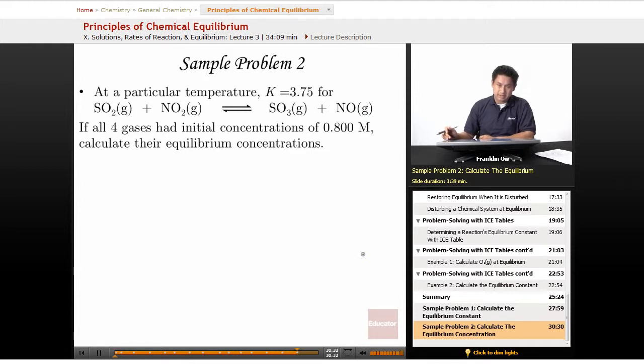And finally the last sample problem is sample problem number two. At a particular temperature, K is equal to 3.75. If all four gases had initial concentrations of 0.800, calculate their equilibrium concentrations.